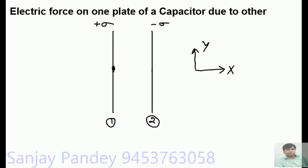The electric field on the surface of plate 1 due to plate 2 is E = σ / (2ε₀). The direction of E will be perpendicularly inward for plate 2 because it is negatively charged.